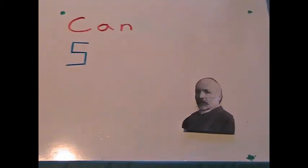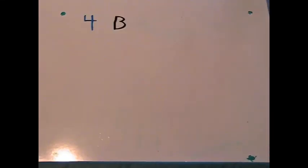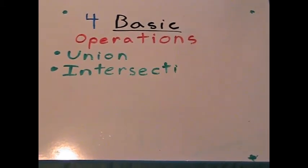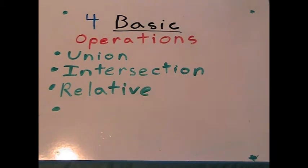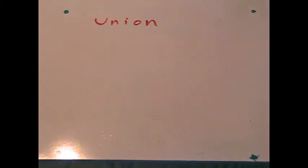We will now go through the basic operations of Cantor's set theory. The four basic operations are union, intersection, relative complement, and complement.